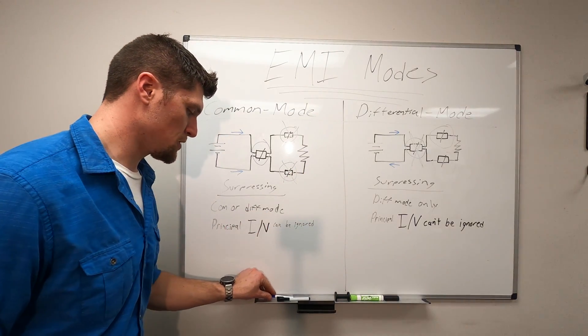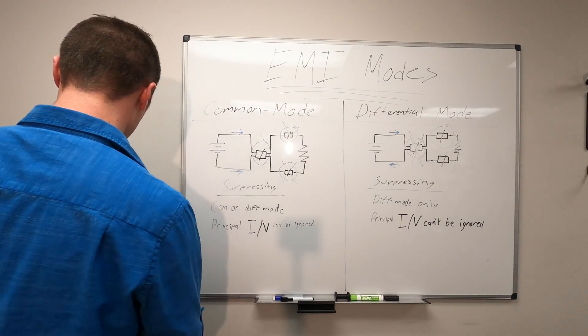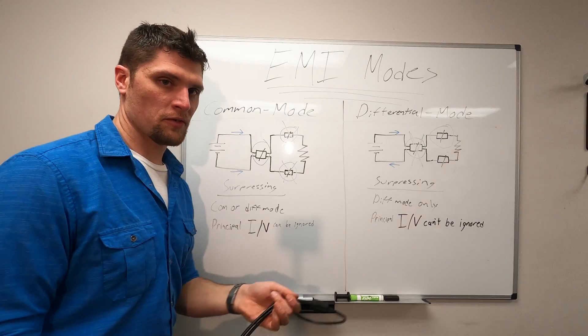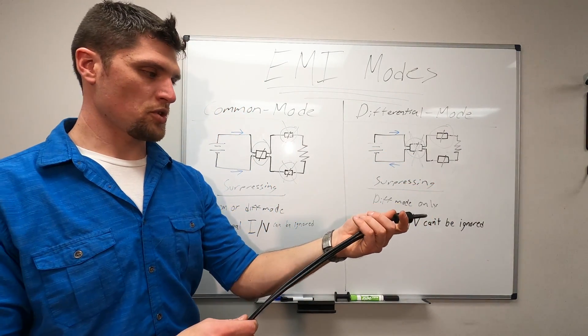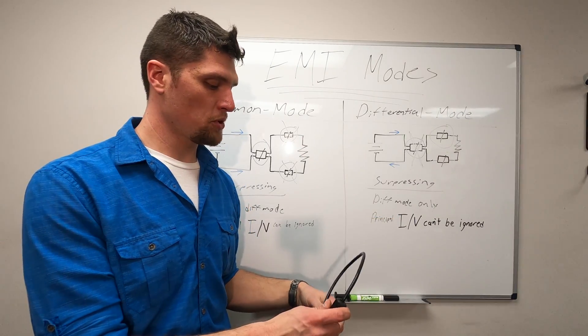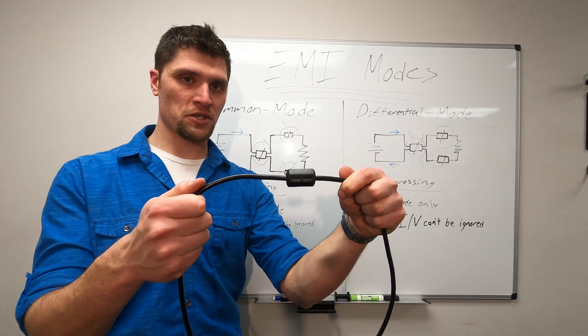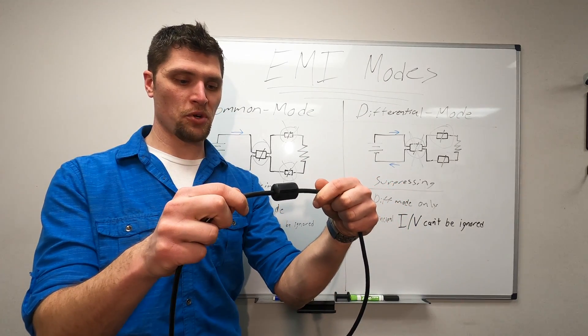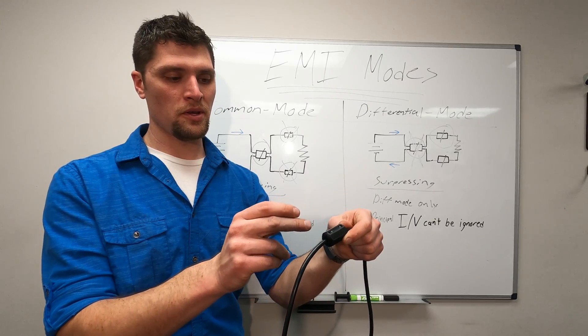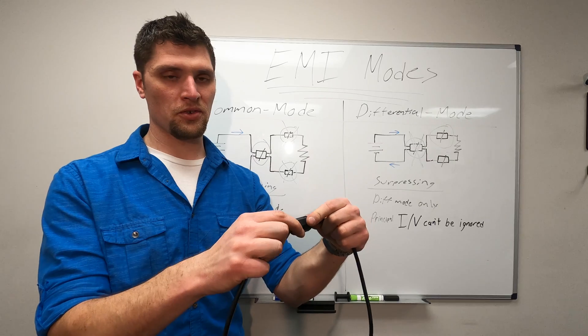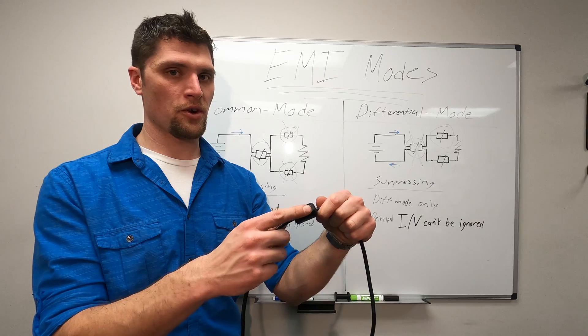And just to give you a physical representation of what something like this looks like. We have a power cable here that has been stripped away to show differential mode and common mode. So starting off with common mode, this is a ferrite suppression core in common mode on this cable. Now it's in common mode because all the ground and the other conductors within this cable are all passing through this core here.